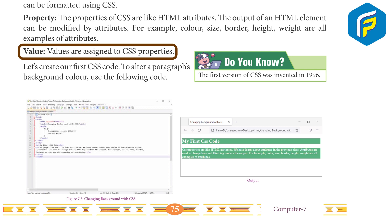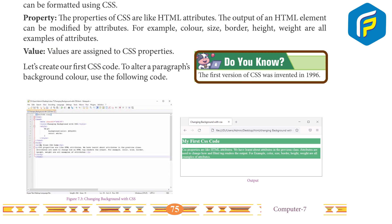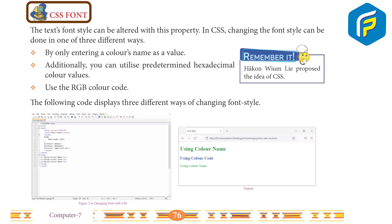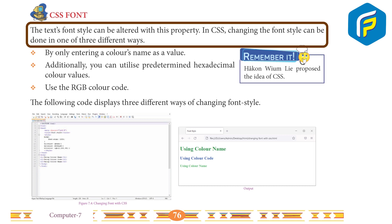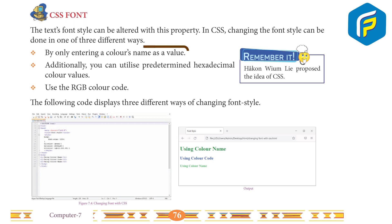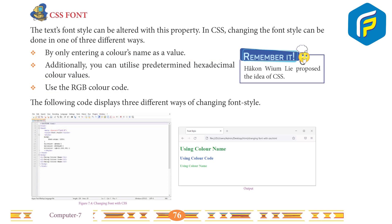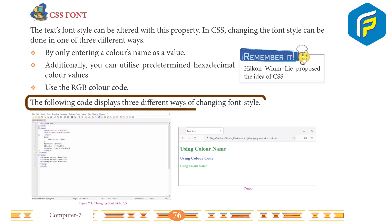Values are assigned to CSS properties. Did you know the first version of CSS was invented in 1996? Let's create our CSS code: to alter a paragraph's background color, use the following code. CSS font: the text font style can be altered with this property in CSS. Changing the font style can be done in one of three different ways: by entering a color's name as a value, by using predetermined hexadecimal color values, or by using the RGB color code.